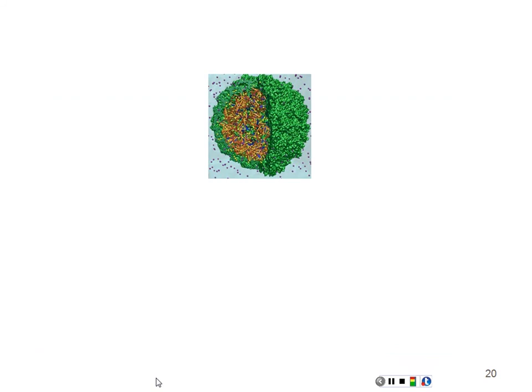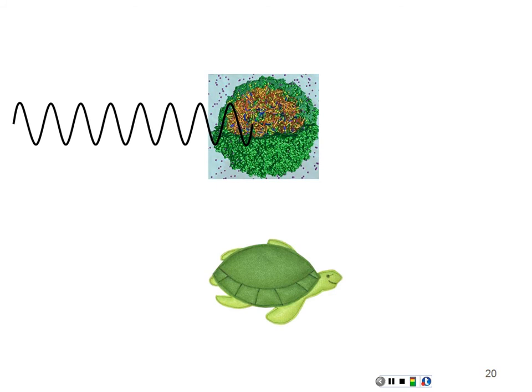Another example: some viruses have shells whose cavities have an associated natural frequency. If you were to apply that same natural frequency externally, you could oscillate the virus to resonance and explode it, killing the virus. This could be a future medical technique based on physics — attacking a virus based on its natural frequency rather than using drugs that the virus might adapt to.